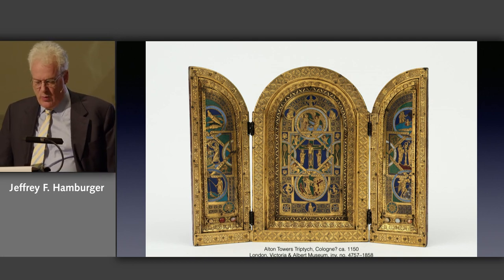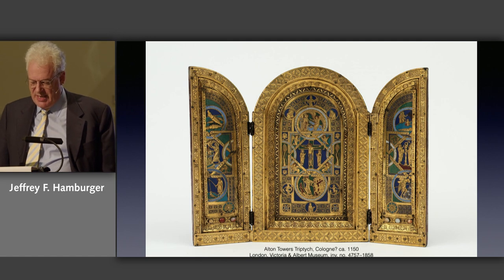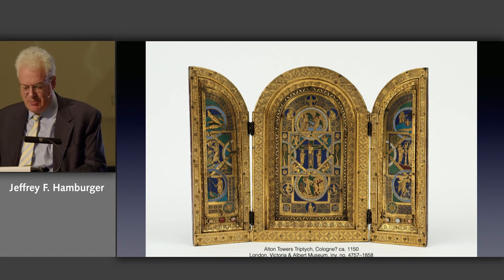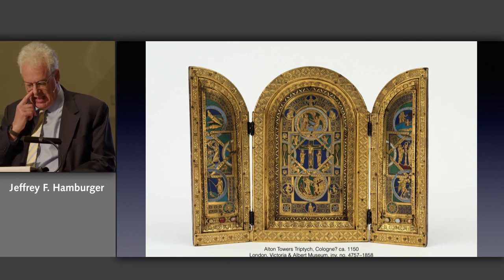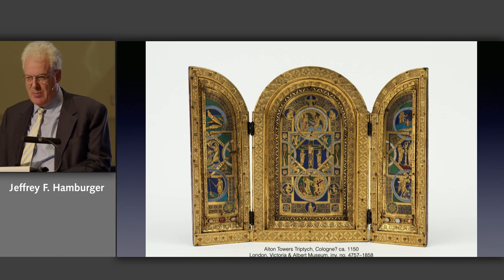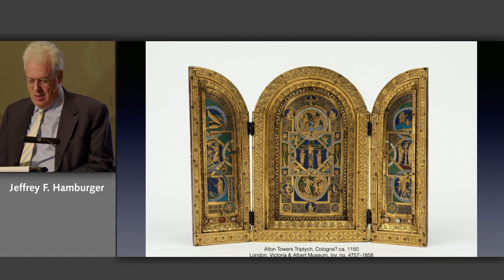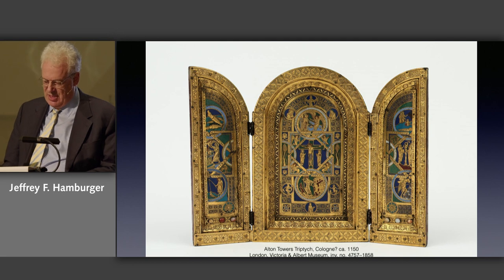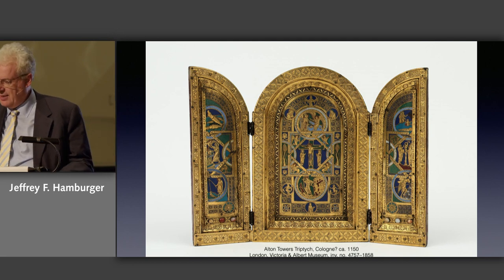When open, the two wings of the triptych, where they join together, would match the geometry of the center. When closed, however, the object would have looked like nothing so much as the form traditionally given to the tablets received by Moses on Mount Sinai — the literal embodiment of the old law. Only when opened is the old law broken, revealing the truth of the Christian dispensation at the center.